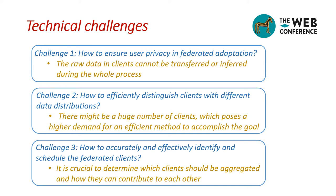Achieving federated adaptation is not trivial. There are at least three challenges that need to be effectively addressed. First, how to ensure user privacy in federated adaptation — the raw data in clients cannot be transferred or inferred during the whole process. Second, how to efficiently distinguish clients with different data distributions, given that there might be a huge number of clients. Finally, how to accurately and effectively identify and schedule the federated clients, determining which clients should be aggregated and how they can contribute to each other.